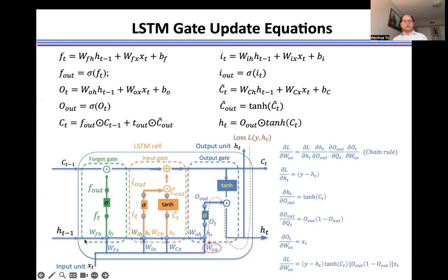In the input gate, we use the previous hidden state and the current input as the input to the nonlinear activation function to control what input information is allowed into the current cell. And in the output gate, we use the previous hidden state and the current input together as the input to the nonlinear activation function, and use this output as the gate to control what information is allowed to leave this cell.